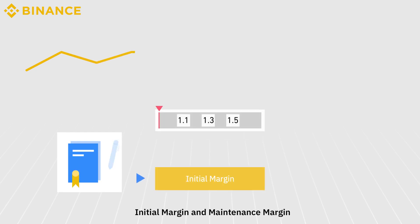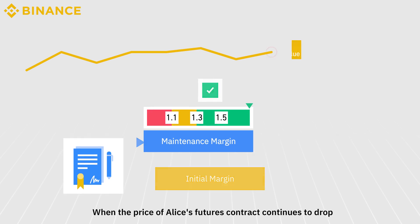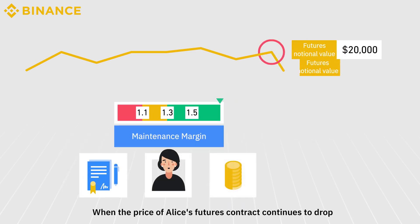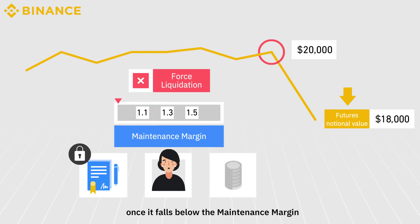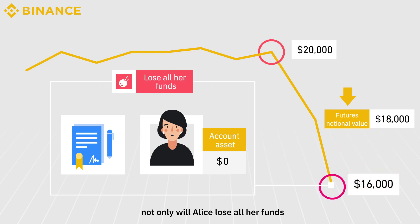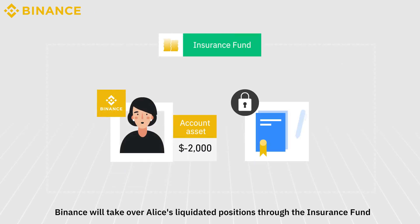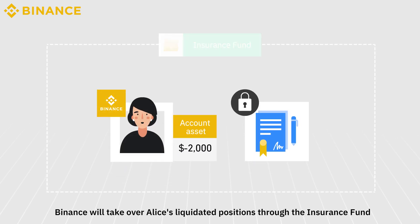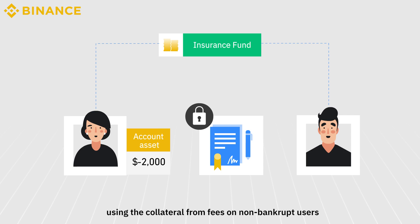In futures trading, Initial Margin and Maintenance Margin are introduced to ensure the validity of a trade. When the price of Alice's futures contract continues to drop, her position will be automatically liquidated once it falls below the maintenance margin. If the market continues to go down, not only will Alice lose all her funds, she will also owe the exchange liquidation fees. Binance will take over Alice's liquidated positions through the Insurance Fund. The Insurance Fund is designed to cover users' losses when their accounts go below zero in value, using the collateral from fees on non-bankrupt users.